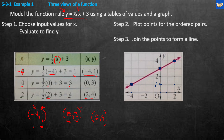This is an equation of a line — y = ½x + 3 is a linear function. Our three ordered pairs are (-4, 1), (0, 3), and (2, 4).